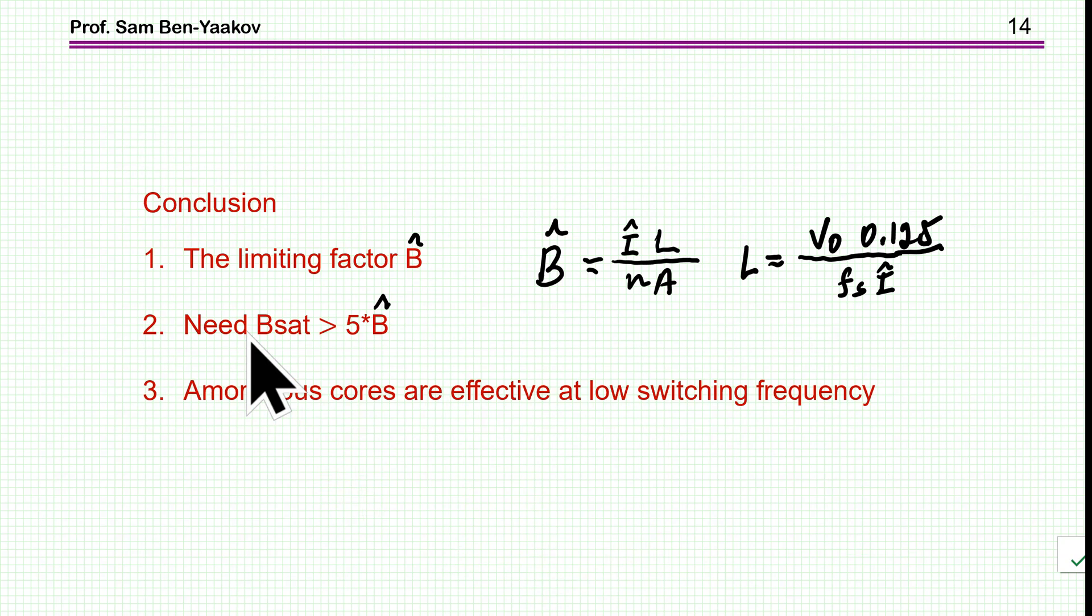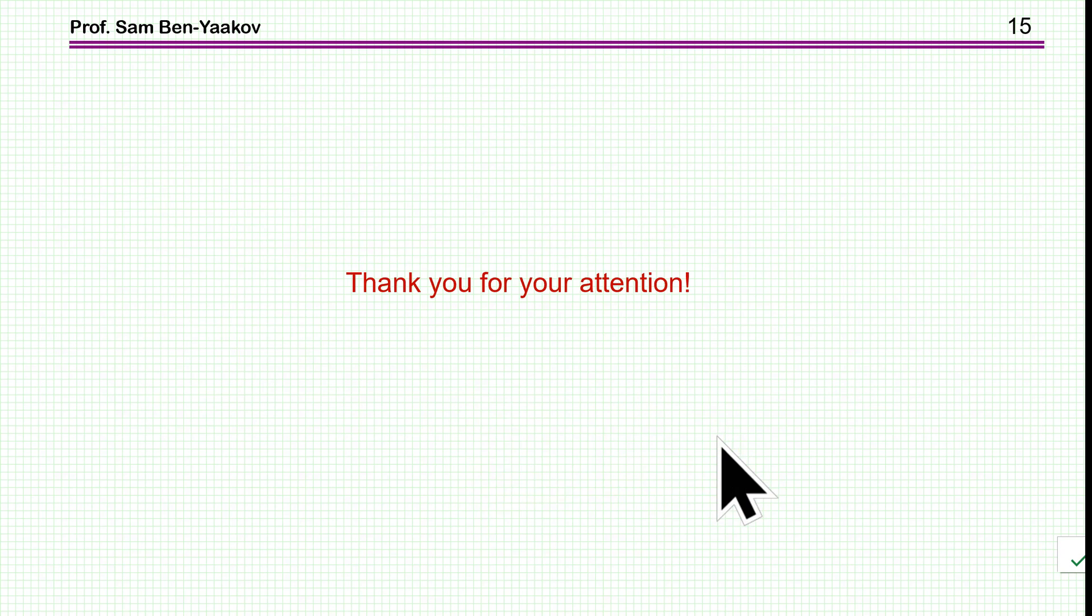Here is my conclusion. The limiting factor is, in fact, the ripple of the magnetic flux density, not the maximum value. And here I'm showing the relationship to the current and what should be the inductance for a given ripple. Once we know what is the ripple that we are going to work with, the magnetic flux density ripple, then we need B sat, which is at least five times larger. If it is much more than that, we are not going to use it. It's a waste. The conclusion is that the amorphous cores at this point, as far as I can tell, from the information I could find on the web, are effective at low switching frequency. There is a problem at high switching frequency.